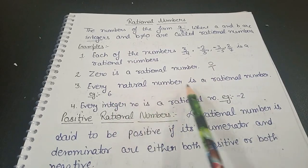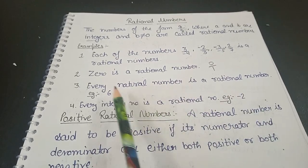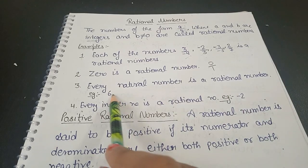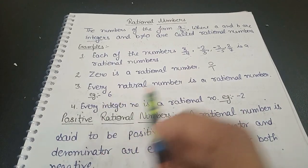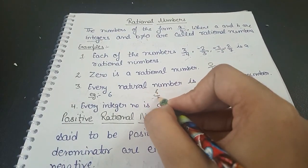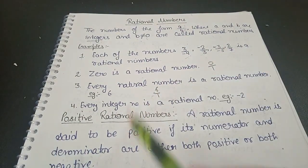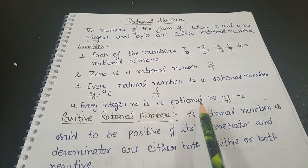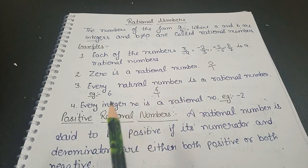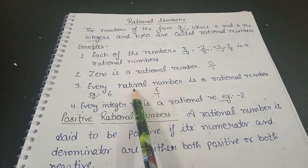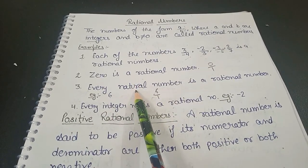Every natural number is a rational number. For example, 6 is a natural number, so 6 is also a rational number — because we can write it as 6/1, which is in the a/b form. Similarly, every integer is a rational number.